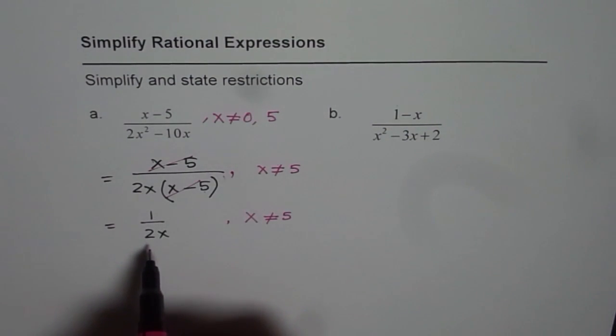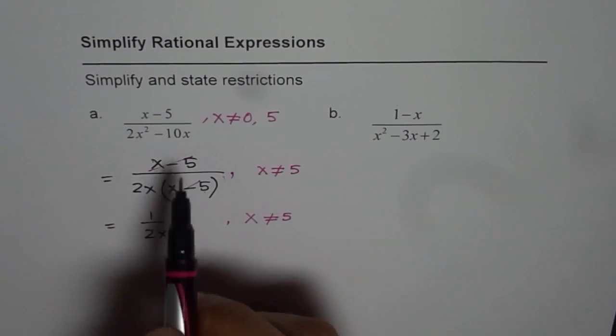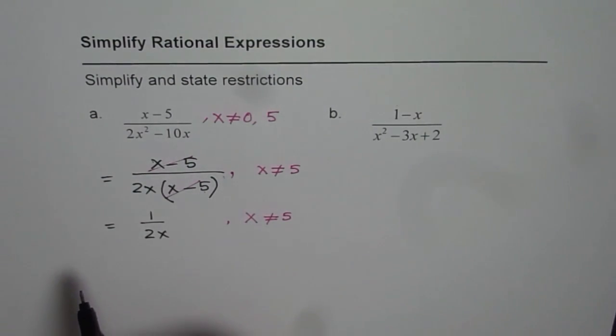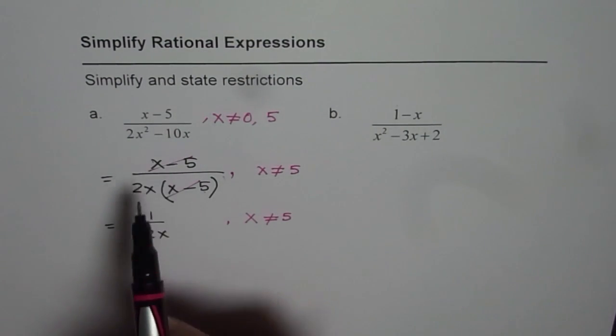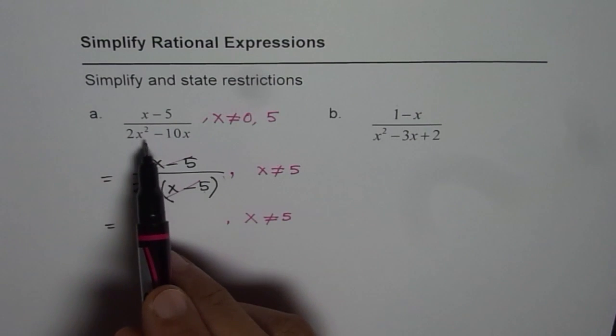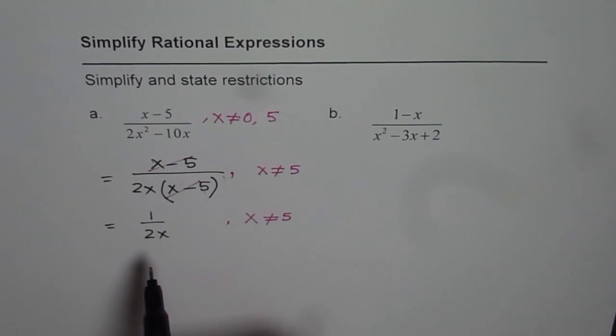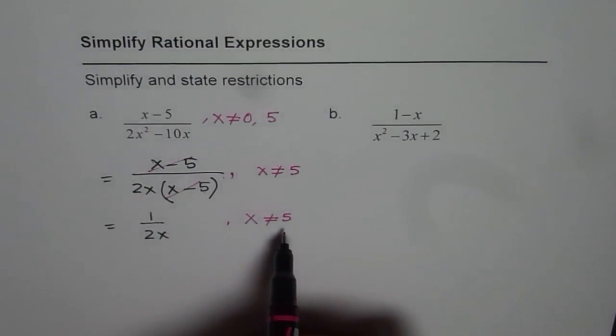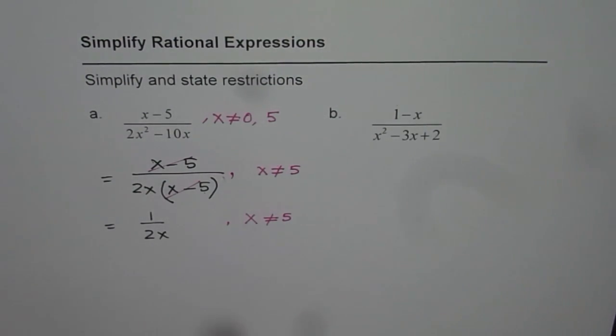Now, when you look at this simplified expression, we have another restriction which is x is not equal to 0 also. So the function or expression which you are working with has two restrictions. You should always write these restrictions before cancelling out. That is the whole idea. Remember that part. Do not forget to include 5 amongst the restrictions.